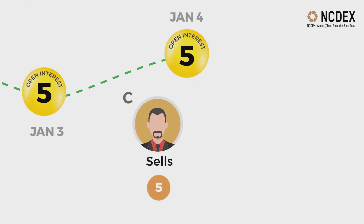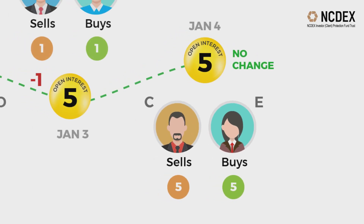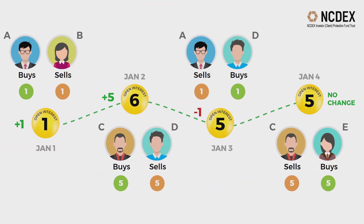On January 4th, existing participant C sells 5 contracts and squares off his position of January 2nd. New participant E buys 5 contracts. OI remains unchanged at 5, no change. Similar changes in OI keep on happening till the contract expires.